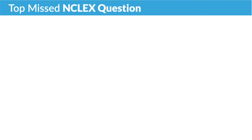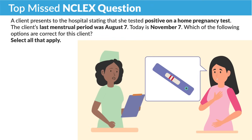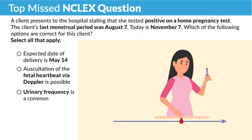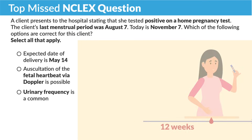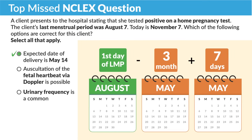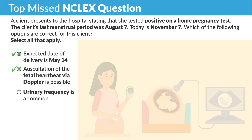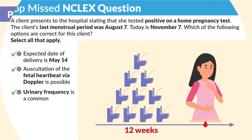Now for a top missed NCLEX question that incorporates everything we've learned. A client presents to the hospital stating she tested positive on a home pregnancy test. Her last menstrual period was August 7th and today is November 7th — so she's been pregnant about 12 weeks, the first trimester. The expected date of delivery is May 14th: August 7th minus three months is May 7th, add seven days equals May 14th. Auscultation of fetal heartbeat via Doppler is possible — correct, as a fetal heart rate can be heard via Doppler or ultrasound. And urinary frequency is very common in the first trimester.